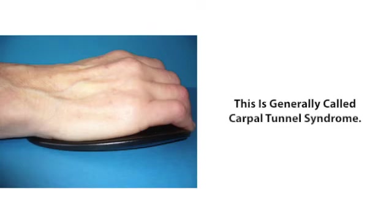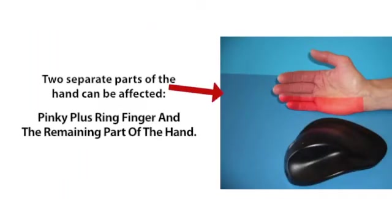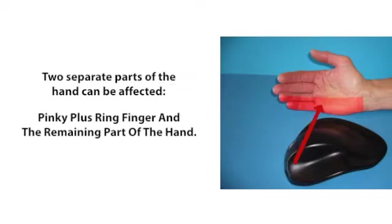This is generally called carpal tunnel syndrome. Two separate parts of the hand can be affected: pinky plus ring finger and the remaining part of the hand.